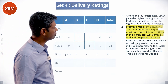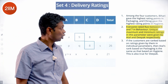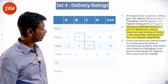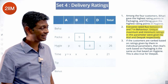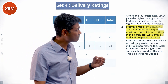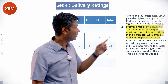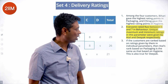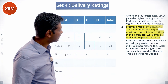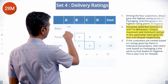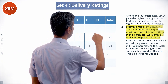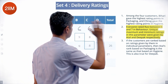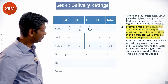Everyone rated Ravi between 5 and 7 in behavior. The unique maximum was given by Atal and the unique minimum by Deepak — so Atal gave 7 and Deepak gave 5. The remaining two customers, Bihari and Chirag, each gave 6.